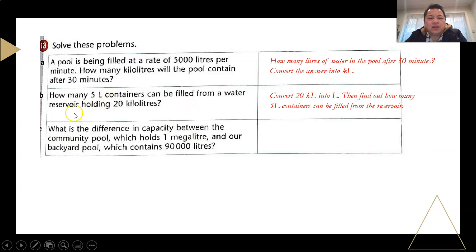The next one is saying, how many 5 liter containers can be filled from a water reservoir holding 20 kiloliters. So, you got to convert 20 kiloliters into liters, and then from there, you divide by 5. That's right, you need to work with the same unit in order to solve the problem. And last but not least, they say, what's the difference in capacity between the community pool, which is 1 megaliter, and the backyard pool, which is 9,000 liters. So, you have to convert 1 megaliter into kiloliters, and then from kiloliters, you need to change to liters. Remember the relationship, 1 megaliter is 1,000,000 liters. And then from there, you can find the difference between the two capacities.